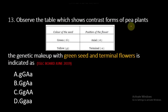Question number 13: Observe the table which shows contrasting forms of pea plants. The contrasting characters are color of the seed and position of the flower. Color of the seed: green is capital G (dominant character) and yellow is small g (recessive character). Position of the flower: axial is capital A (dominant) and terminal small a is the recessive character.